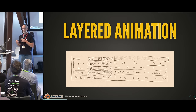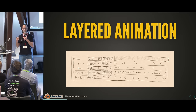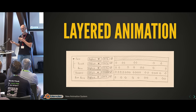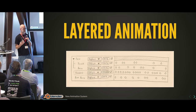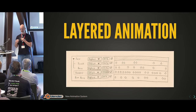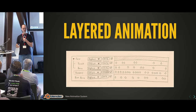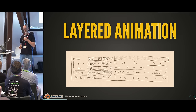Currently, the action is just a dumb bag of F-curves — there's nothing really smart in there. There is no complexity, which is a good thing, but it also means that if we want to put constraints in there as well, it's going to be impossible. So let's stick to animation for now, and just add layers so you can have a run layer and a facial animation layer, turn off the running, do basic face animation, then turn the running back on.